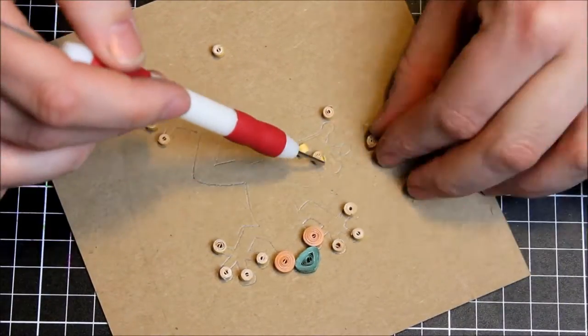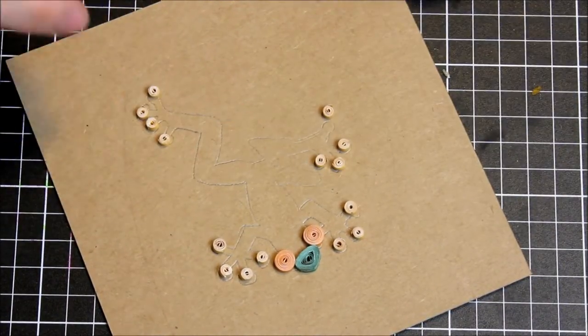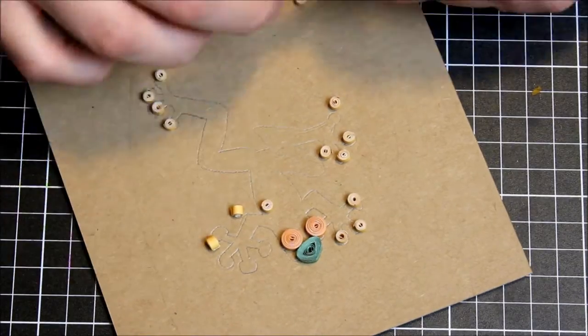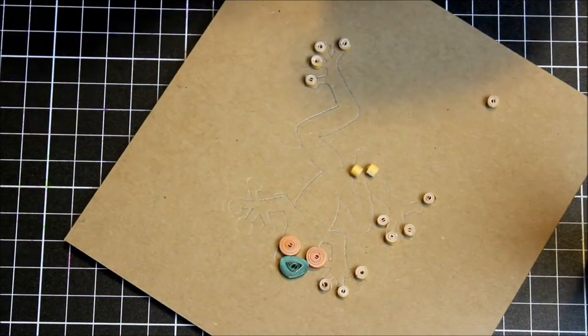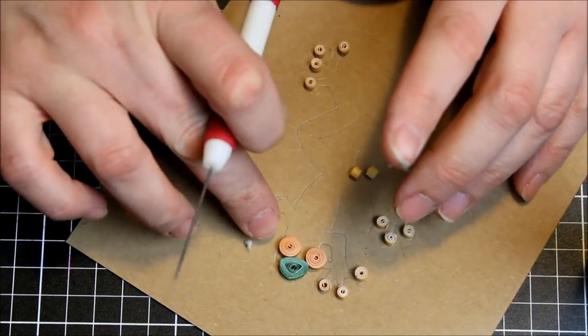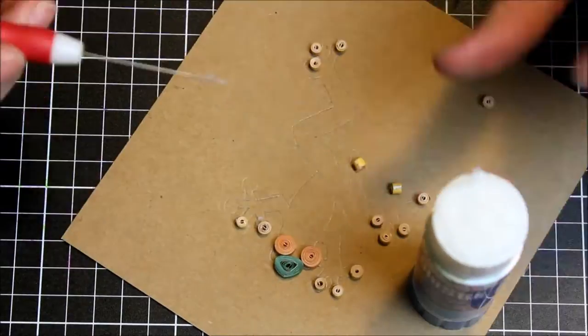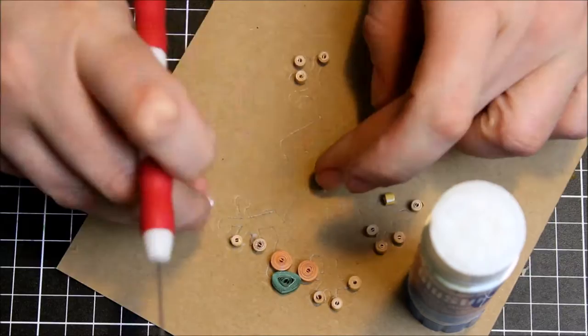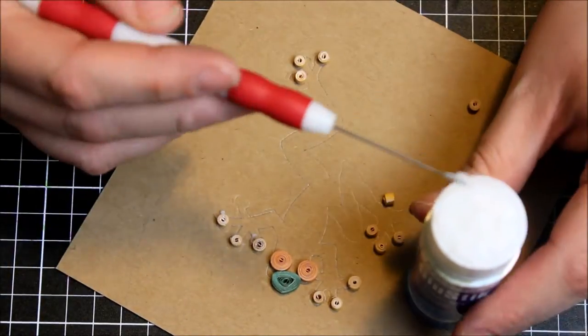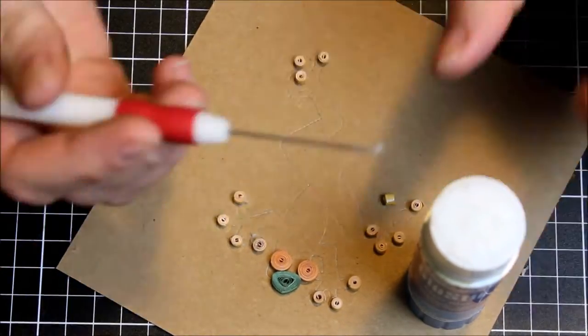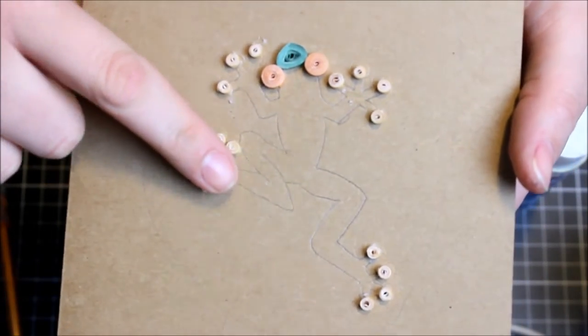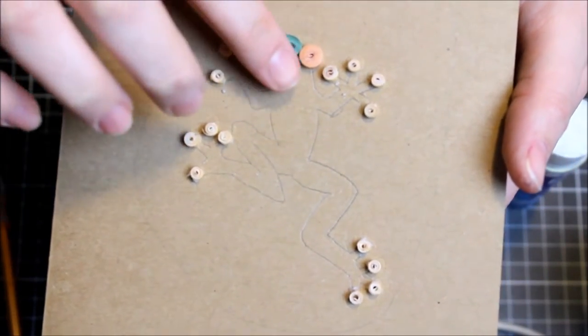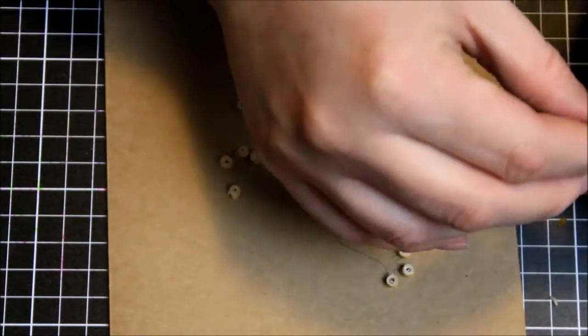I went ahead and created a lot of little yellow coils for his little toes. Then I glued all those down. I'm basically filling my shape of the frog with different sizes and shapes of paper that I've twisted into little coils, making some a bit looser and some a bit tighter, and just filled up the whole shape of my little frog with the green coils.